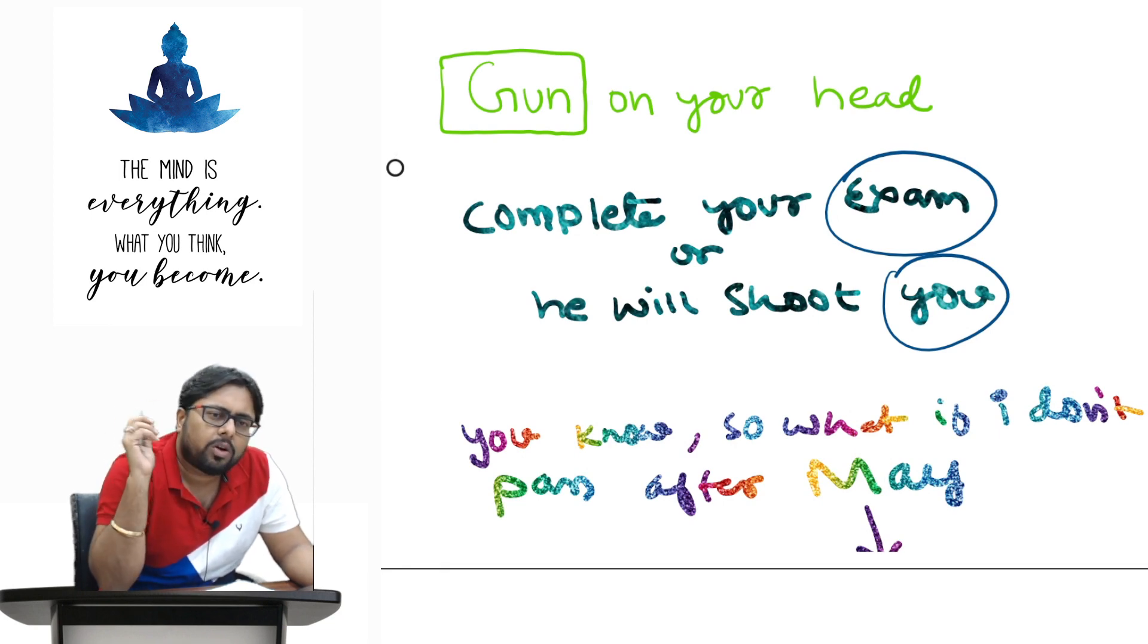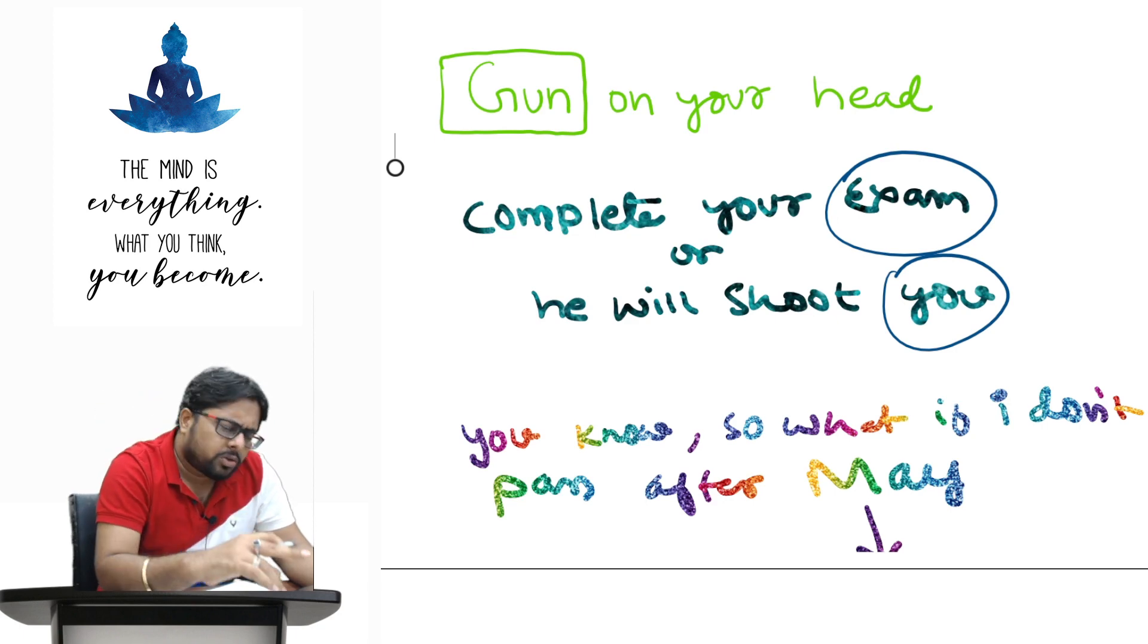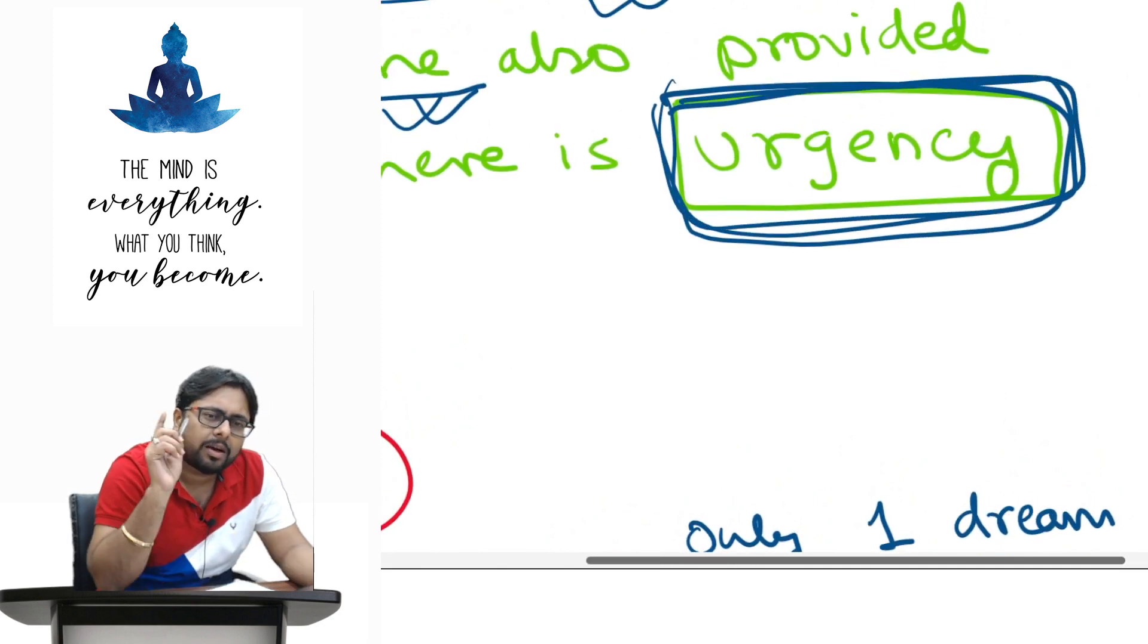You pass your exam or shoot you. Then, there is no other option. He will study. He would not complain that getting demotivated, not able to focus, I am having less time. There would not be any complaint. So, the message is absolutely simple. If it is urgent for you, you would not complain. There would not be any fear. There would not be any disturbance.